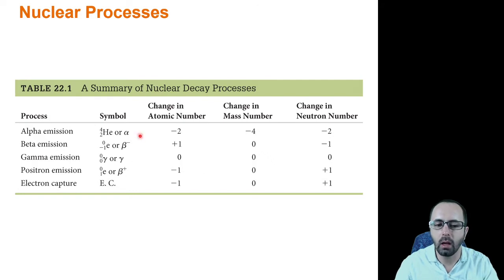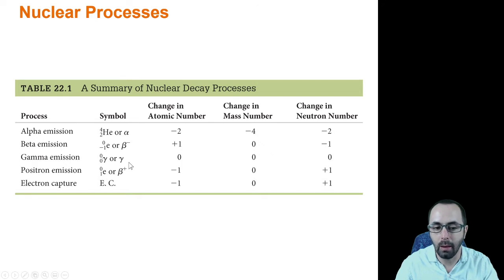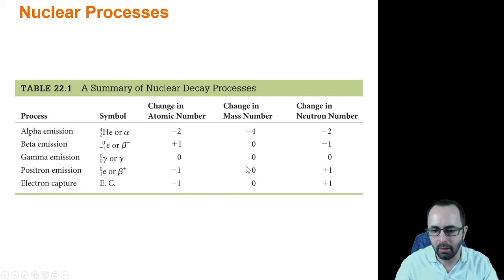Another type of emission that often accompanies alpha and beta emission is gamma emission. When the nucleus is picking up energy, it becomes excited and emits a high-energy photon — gamma radiation, which is very high-energy electromagnetic radiation. This has no mass and no charge — it's essentially high-energy light. There will be no change in the atomic number, mass number, or neutron number.